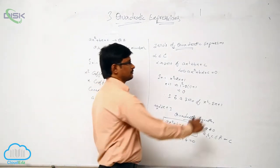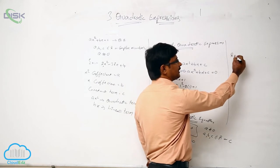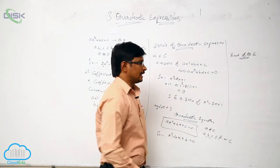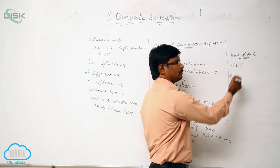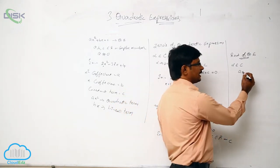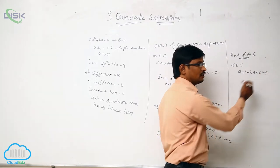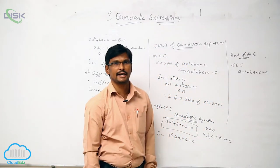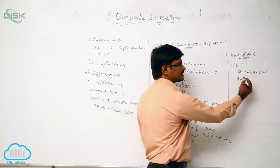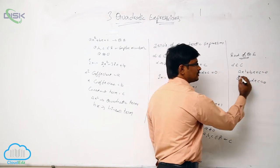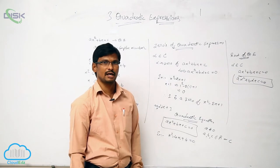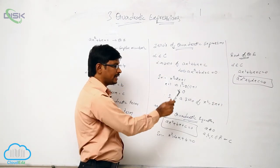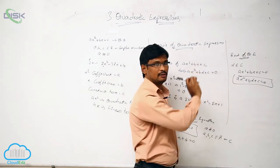Now we will see what a root of a quadratic equation is. A complex number alpha is said to be a root of the quadratic equation Ax squared plus Bx plus C equal to 0 if A·alpha squared plus B·alpha plus C equals 0.